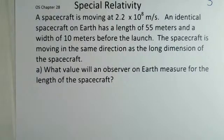When we're standing right beside the spacecraft, the spacecraft is at rest. This spacecraft is moving in the same direction as the long dimension of the spacecraft. What will an observer on Earth measure for the length of this spacecraft that's moving at 2.2×10⁸ meters per second?